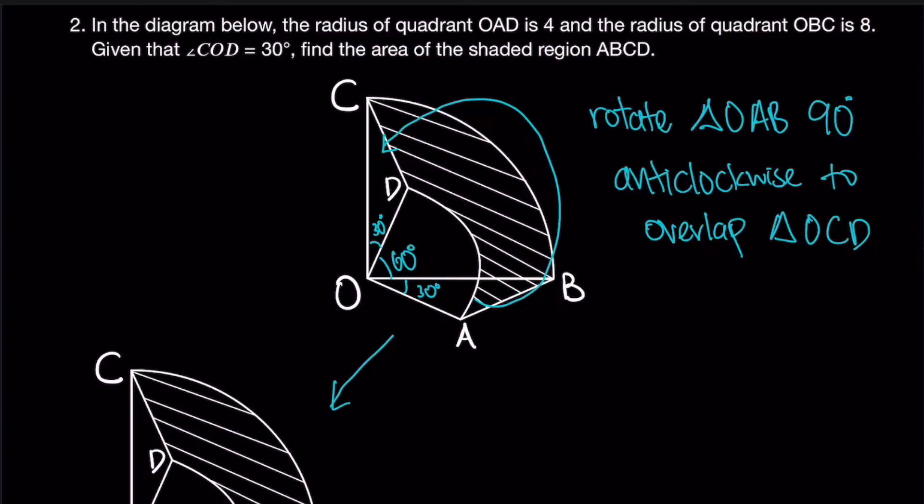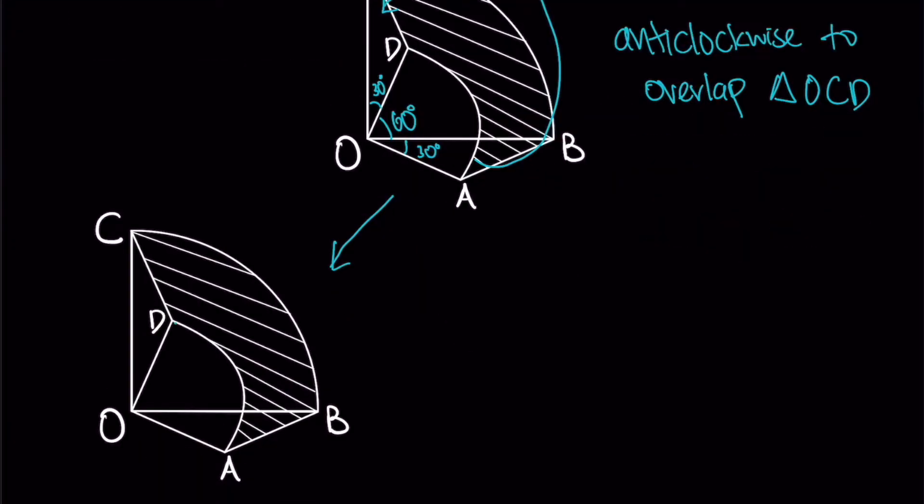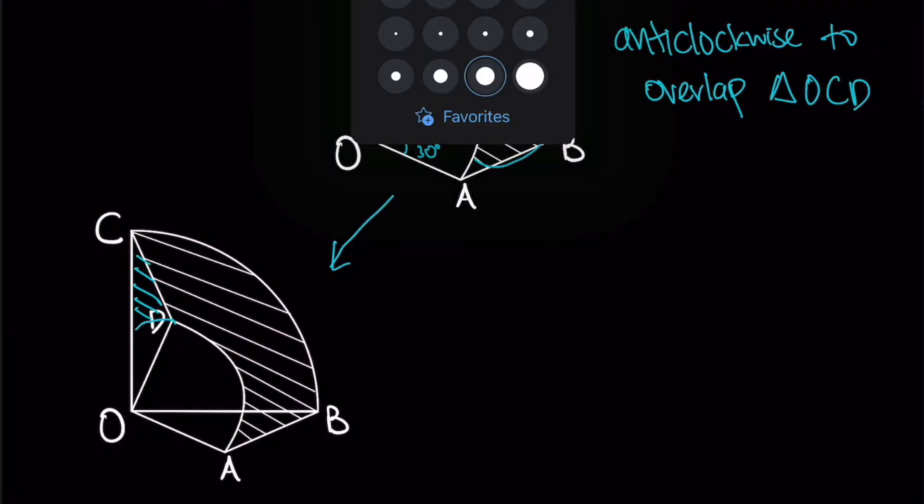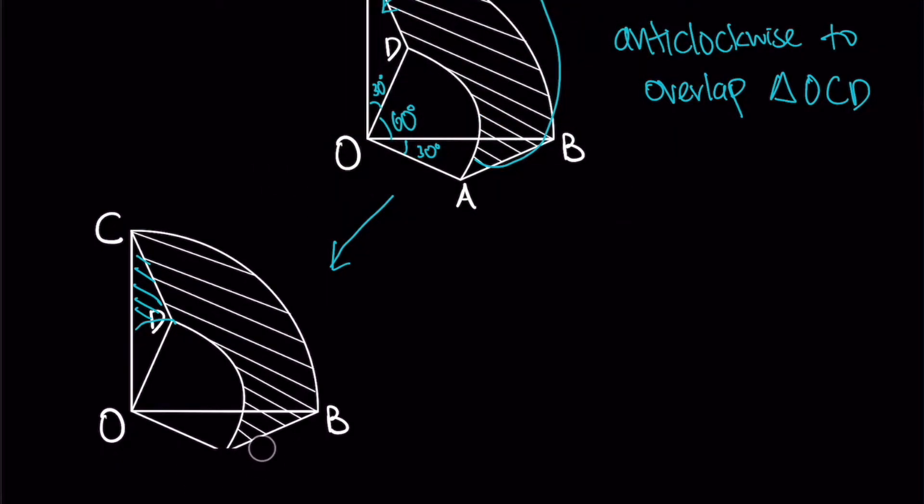So after overlapping, what will it look like? It will look something like this. Alright, and the shaded region will be here. So as you can see, now you'll look. Let me erase the bottom part. Okay, as you can see, now it's just the bigger quadrant minus the smaller quadrant.